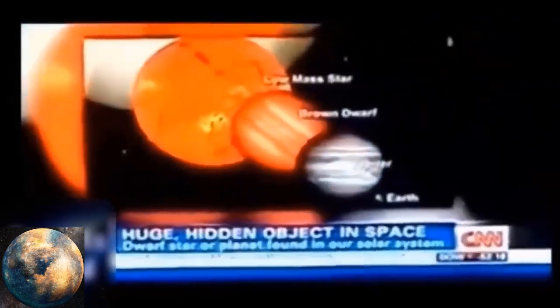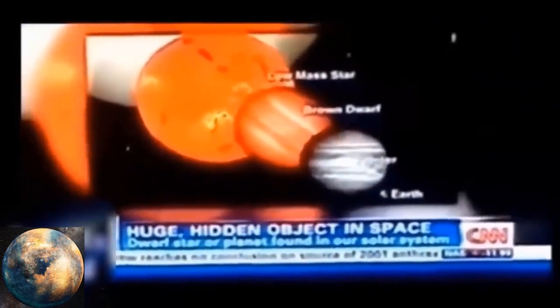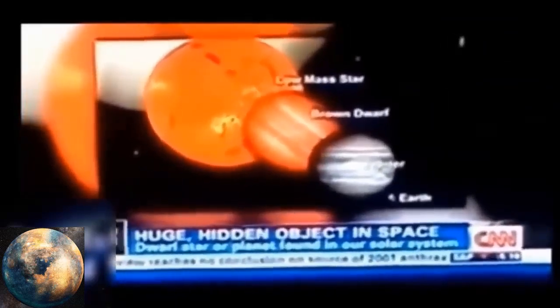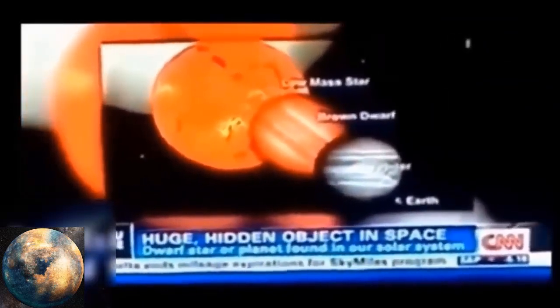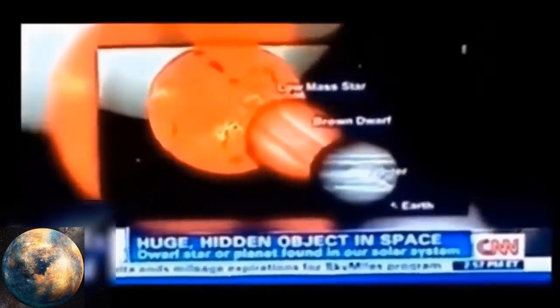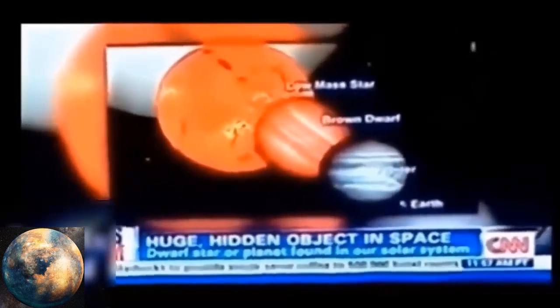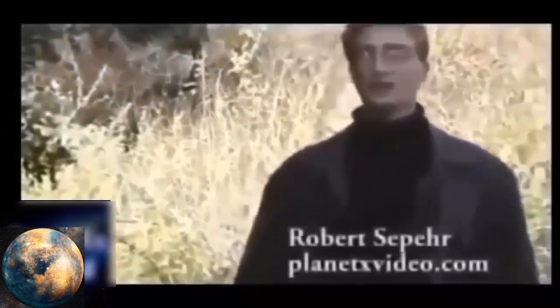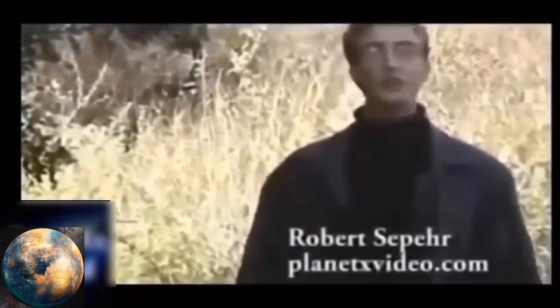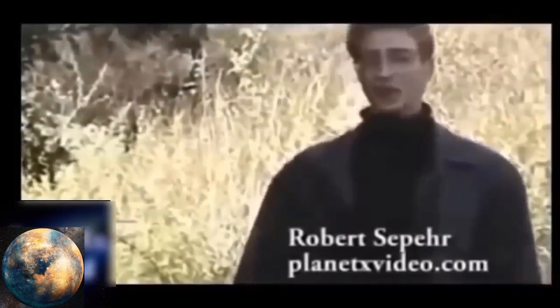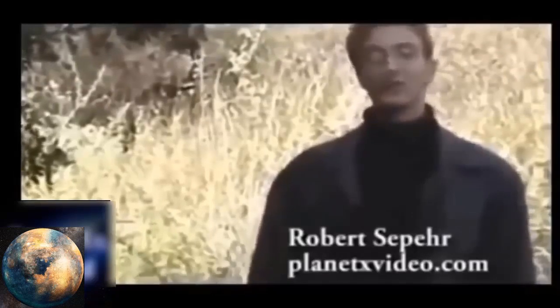There's a huge, hidden, heavenly body right here in our solar system. Evidence is mounting that either a brown dwarf star or a gas giant planet is lurking at the outermost reaches of our solar system, far beyond the planet Pluto. According to the British newspaper The Independent, the object is four times the size of Jupiter. Planet X is a very controversial subject, but it may hold answers to some of life's most perplexing questions. My name is Robert Sepper, and this video is my attempt to explain some of these mysteries.